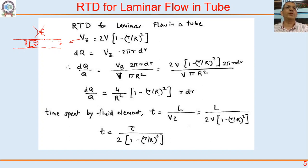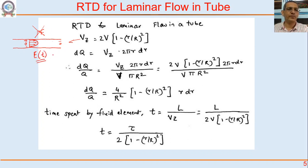This is definitely not plug flow behavior. I want you to derive an expression for E(t) for laminar flow in a tube. The velocity profile is: V_z = 2·V_avg·(1 − (r/R)²).